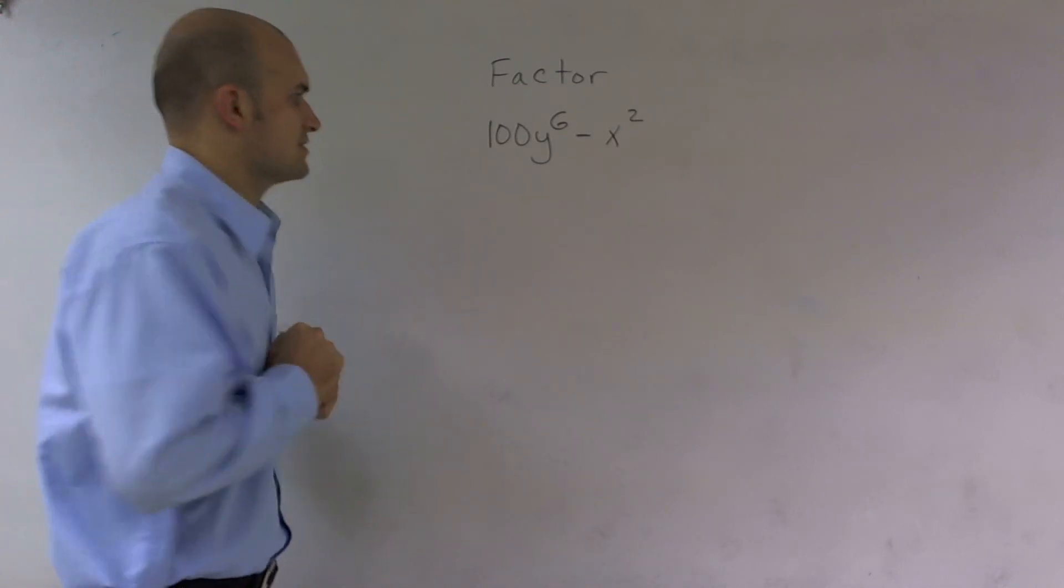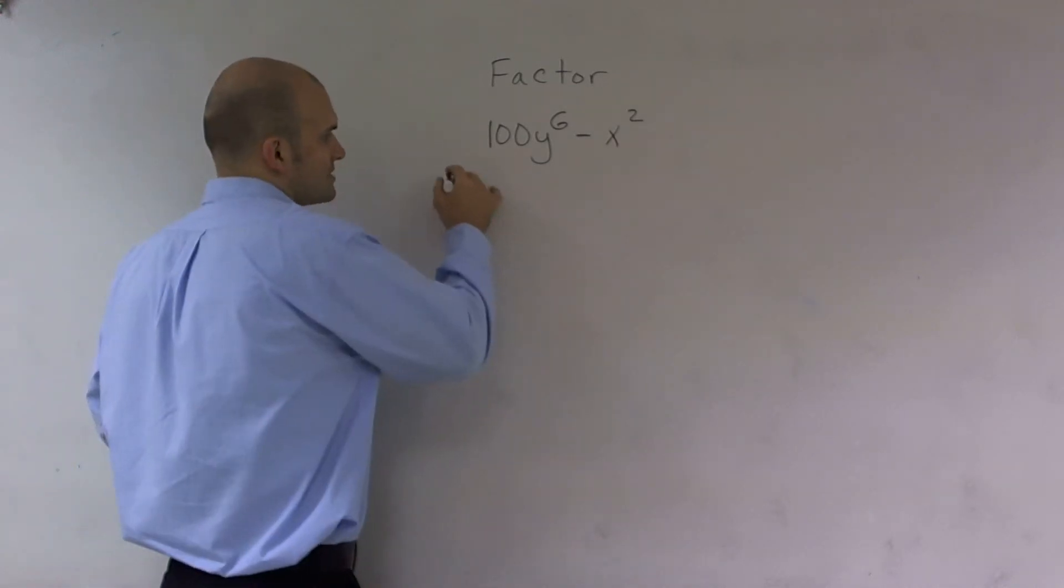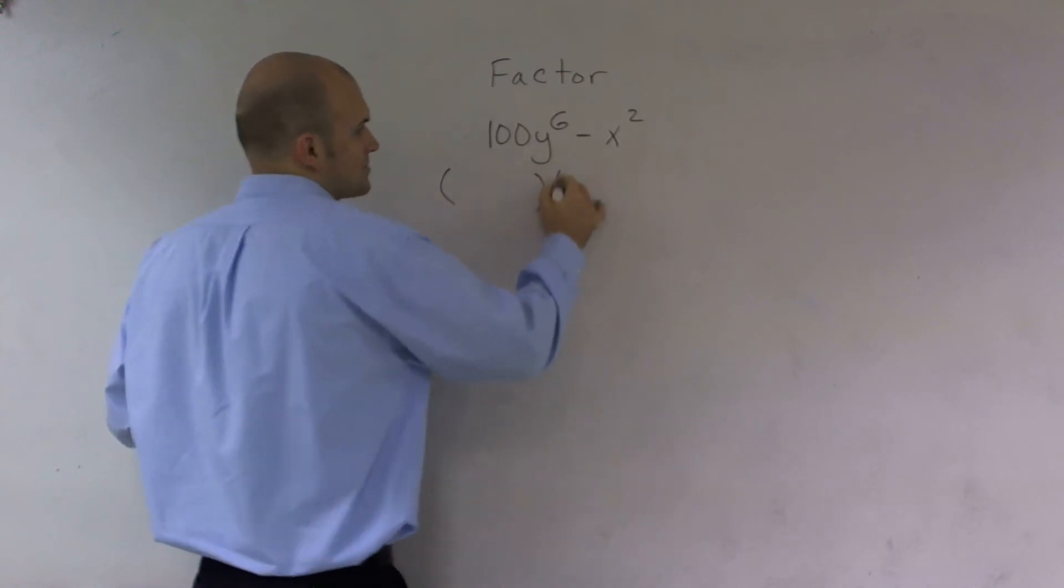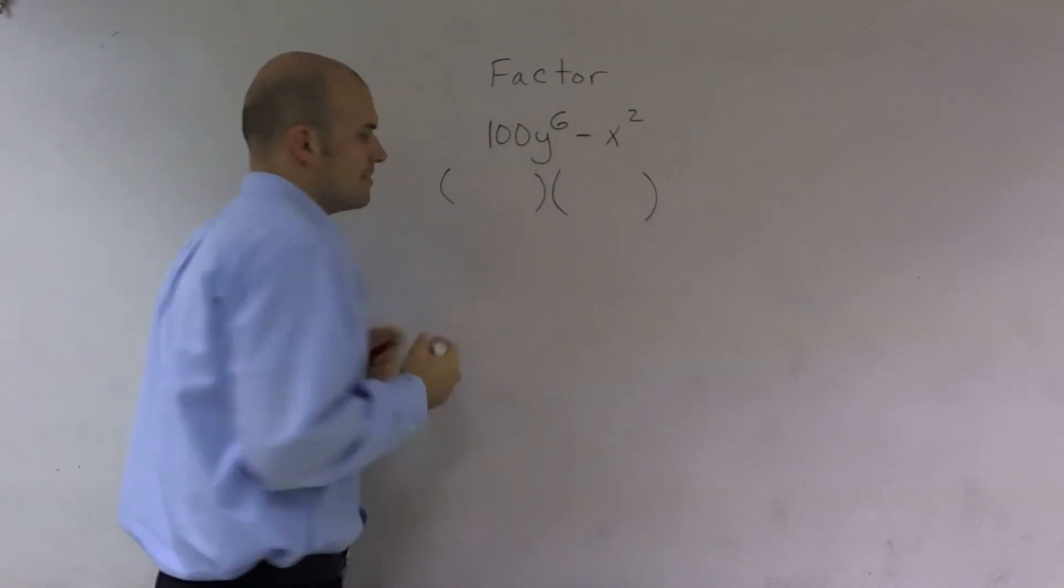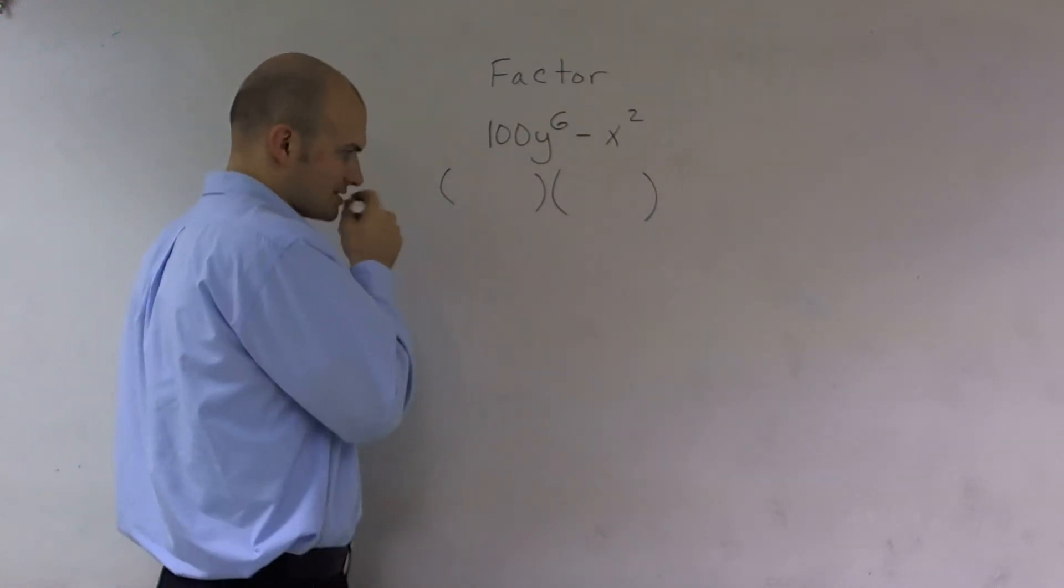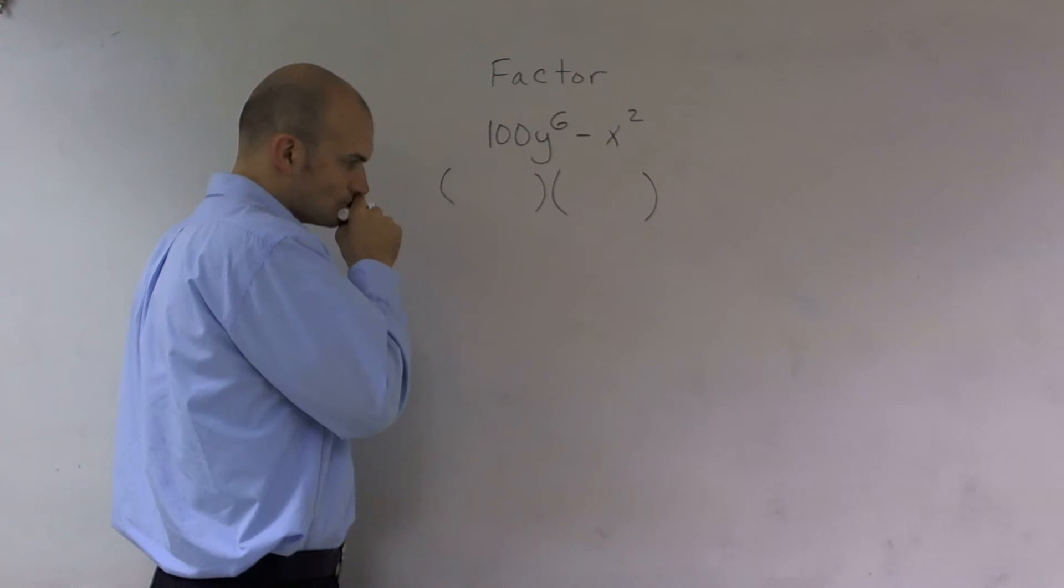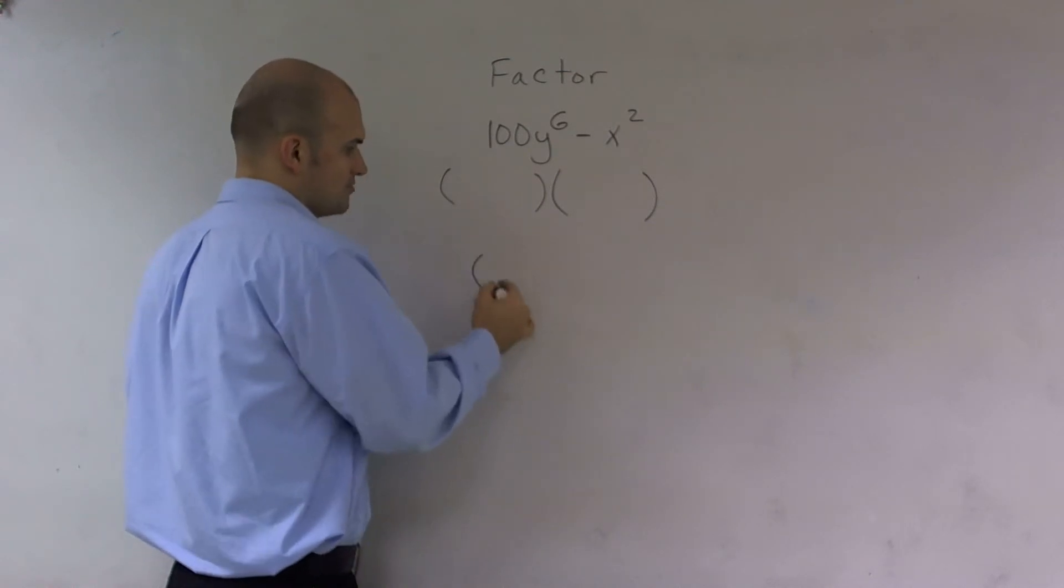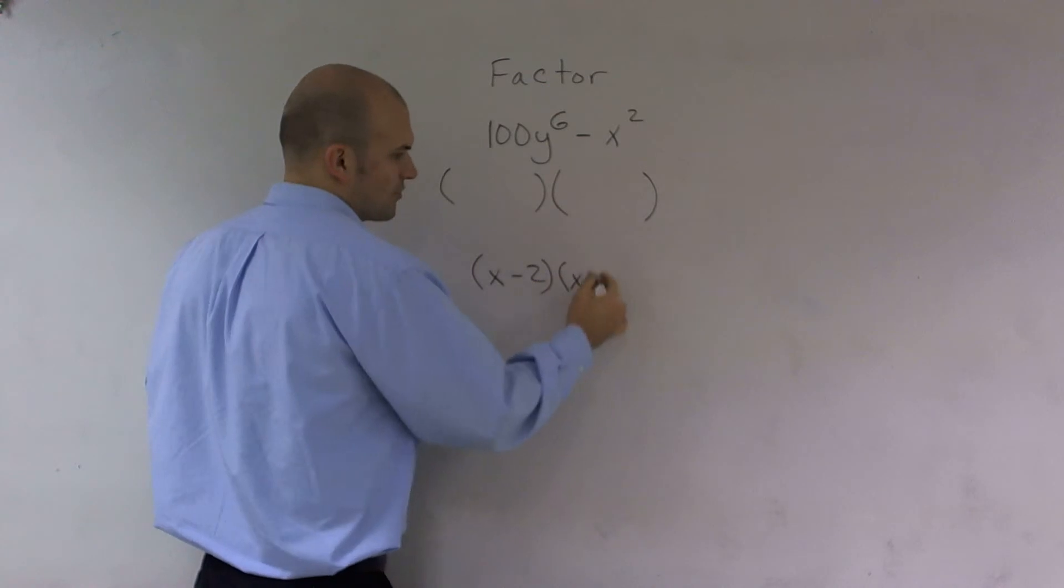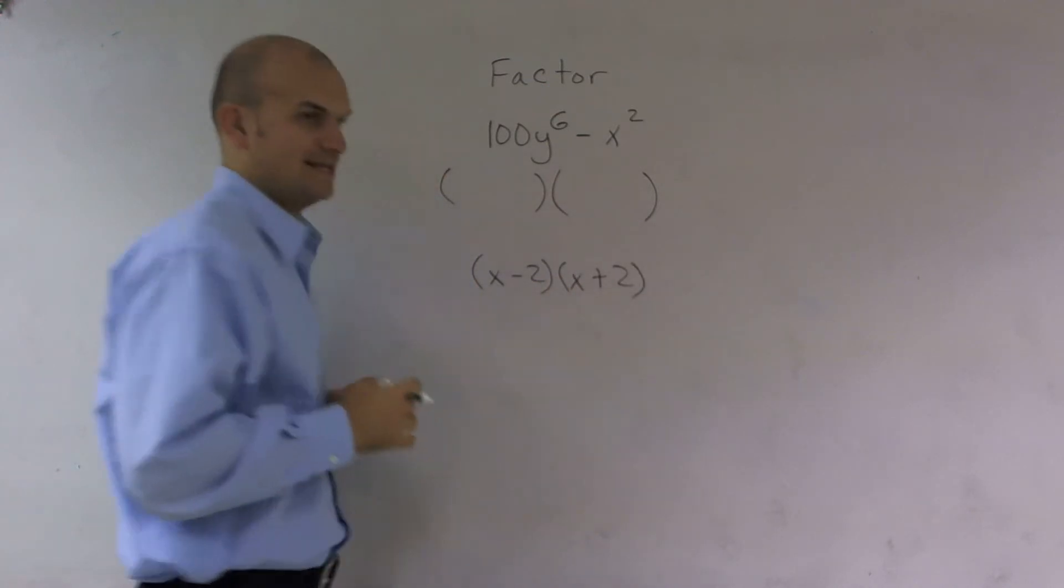So when I'm looking at factoring, I'm going to want to see, can I write this as a product of two binomials? And remember, if we were going to look at this, if we think about two binomials, let's think of x minus 2 and x plus 4. I always try to pick something that's going to be easy.